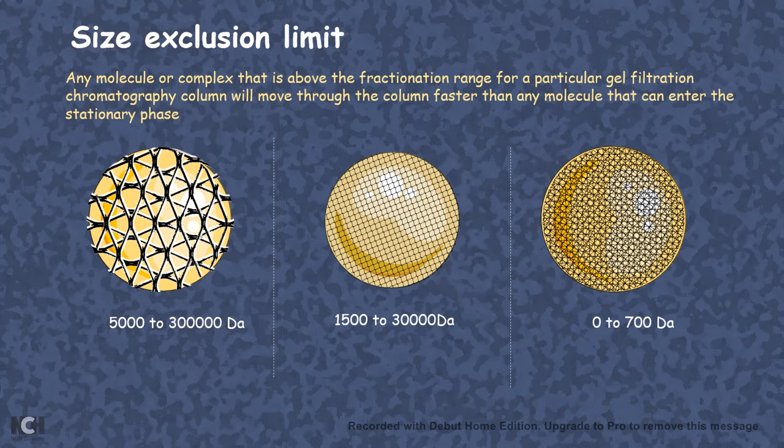Now there is a particular term known as exclusion limit. It's a cutoff size beyond which a particular protein or biomolecule cannot enter the pore of the bead; below that it can enter the pore of the bead. For example, if we say the exclusion range is 0 to 700 dalton, anything below 700 dalton can enter the bead.